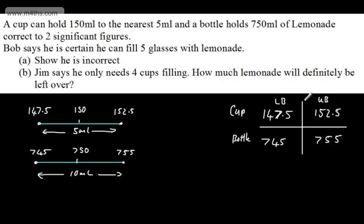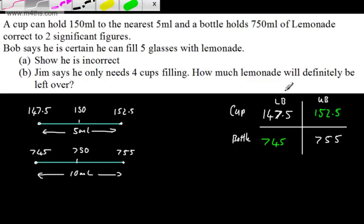So what we want to do is show that Bob is incorrect. Now let's consider the scenario here. If he wants to fill as many as possible, he wants the cups to be as small as possible and the most amount of lemonade. So we're going to look at the worst case scenario for him. The worst case scenario is that he doesn't have a lot of lemonade and his cups are big. That means he's not going to fill as many.